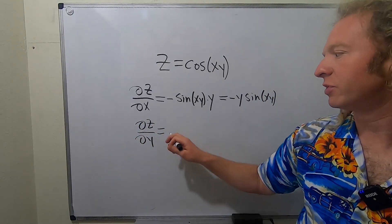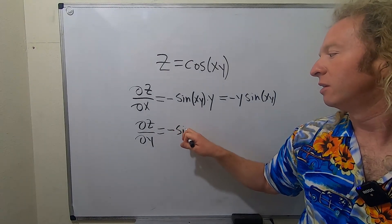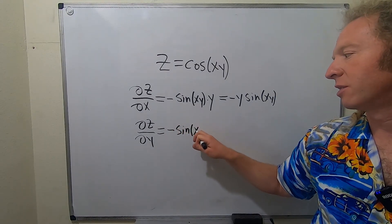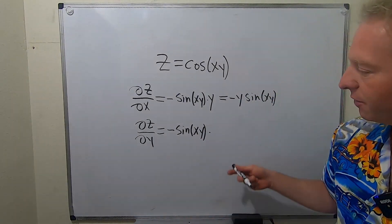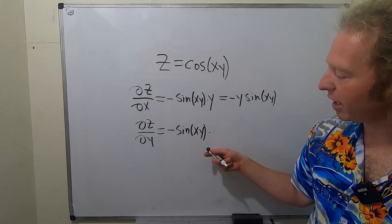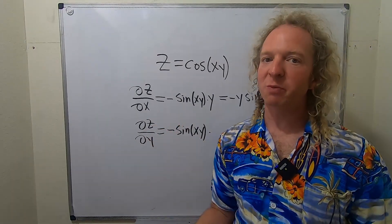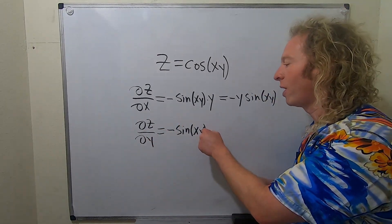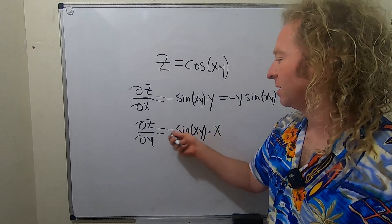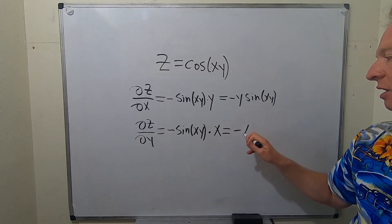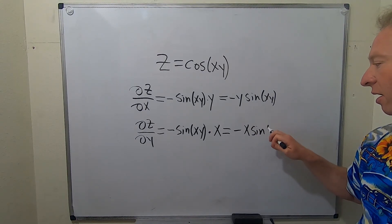Same thing. The derivative of cosine is negative sine. So we leave the inside untouched. This is the chain rule times the derivative of the inside function. The inside function is xy. We're taking the derivative with respect to y. The derivative of y is one. So we simply get x. Last thing to do is just take this and put it in the front. So you get negative x sine of xy.